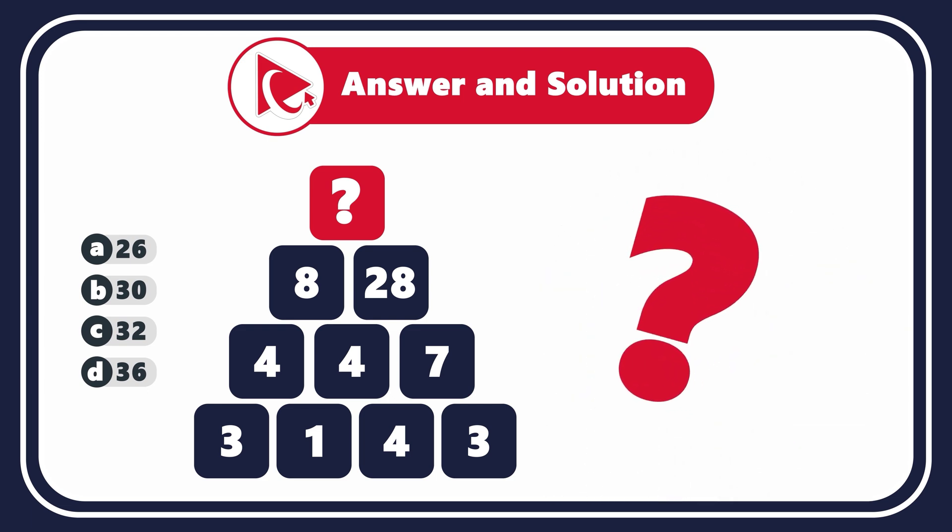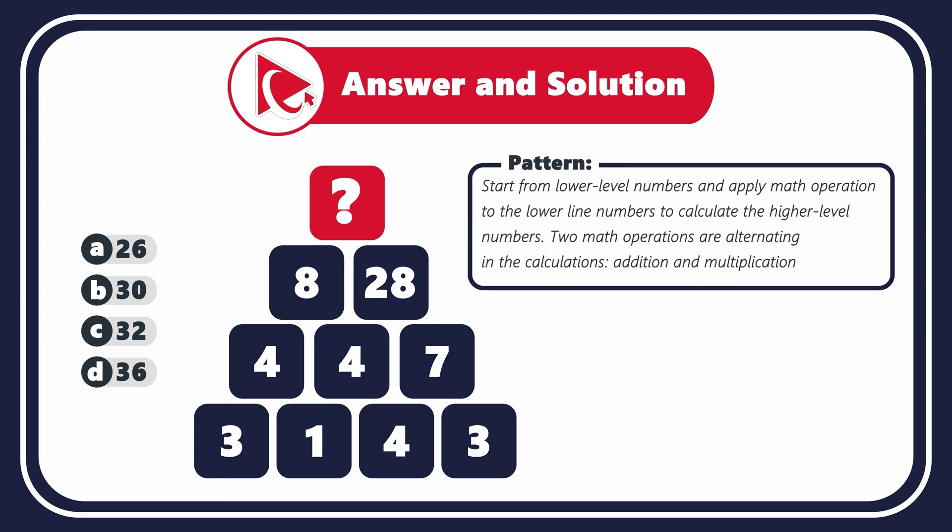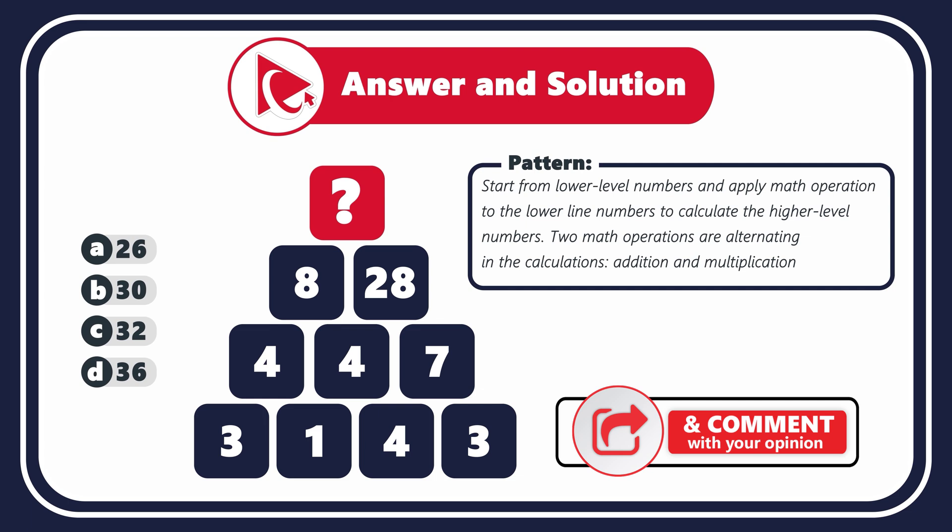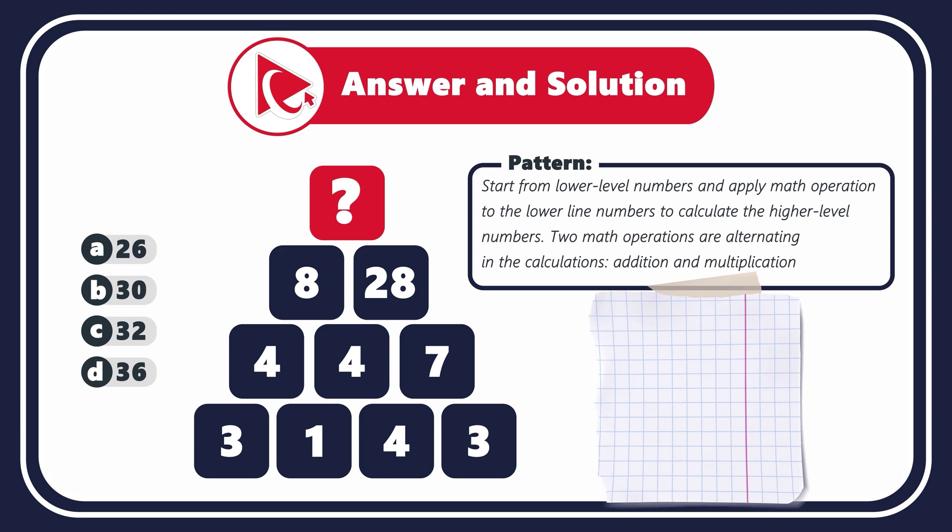Remember how I presented the information to you? I started from the top and went to the bottom. But in fact, you need to start from the low-level numbers and apply math operations to the low-line numbers to calculate the higher-level numbers. To confuse you even more, there are two math operations alternating in the calculations - addition and multiplication.